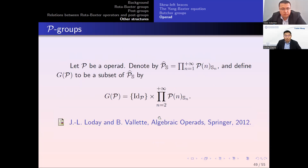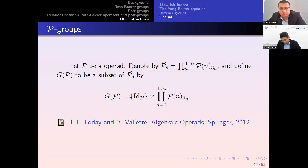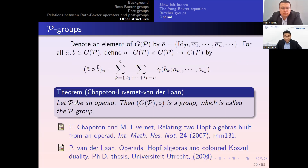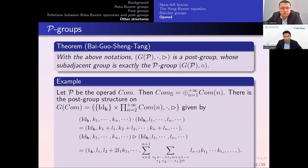There is also another class of examples: the P-groups, where P is an operad. Given an operad, we can define G_P with a group structure called the P-group. We can show that every P-group admits a post-group structure such that its sub-adjacent group is exactly the P-group.